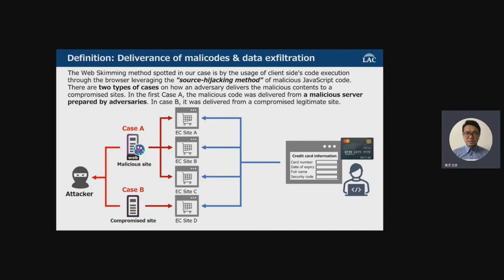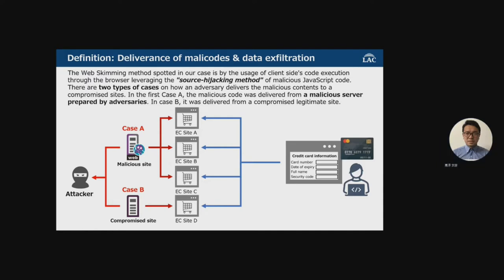The web skimming method spotted in our case uses code execution through the browser. There are two types of cases on how adversaries deliver the malicious content to a compromised site. In Case A, the malicious code was delivered from a malicious server prepared by adversaries. In Case B, it was delivered from a compromised legitimate site.